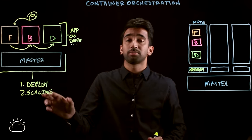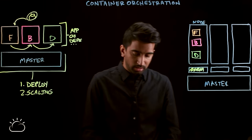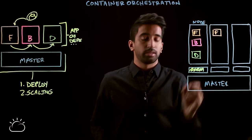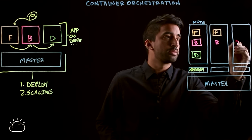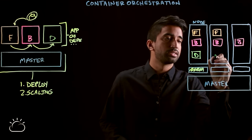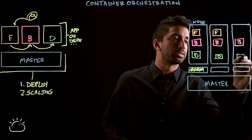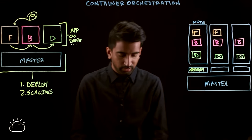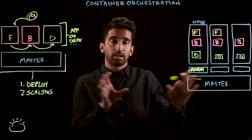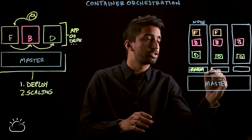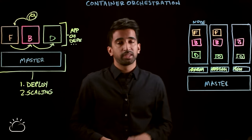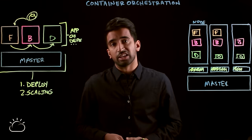The next thing an orchestration platform cares about is scaling an app out. Let's say we want to scale out the front-end twice, the back-end three times, and the database access service three times as well. An orchestration platform will schedule out our different microservices and containers to make sure that we utilize the compute resource in the best possible way. One of the key things an orchestration platform does is scheduling.